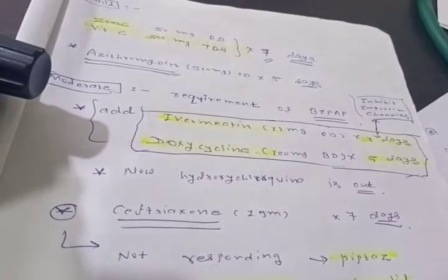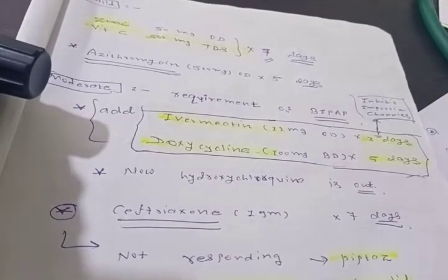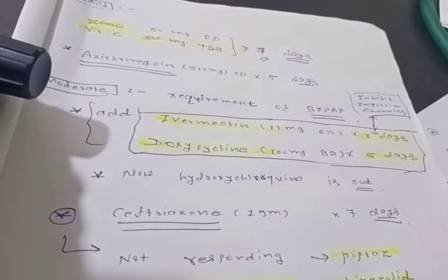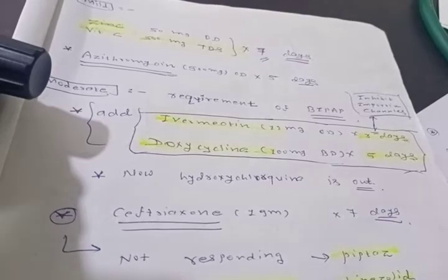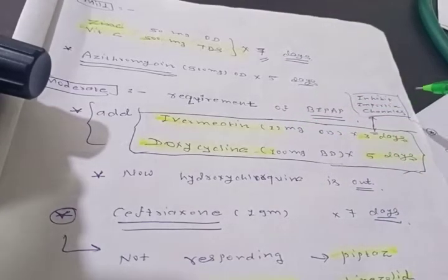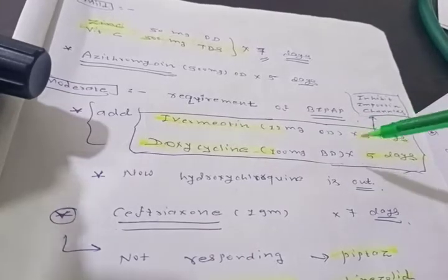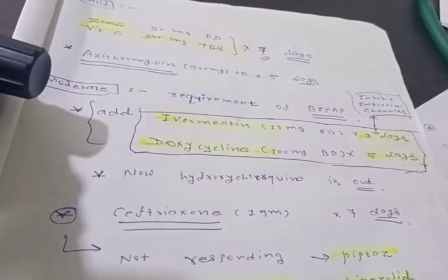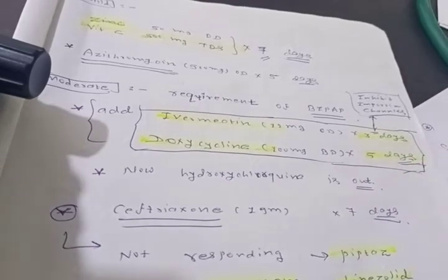Ivermectin, what is the basic mechanism of action? It says that ivermectin is inhibiting the integrin channels which is needed for the entry of the virus into the cell. So it inhibits it, and 12 mg OD is the dose which is found very effective with doxycycline. Doxycycline also, mechanism of action is still not completely understood.